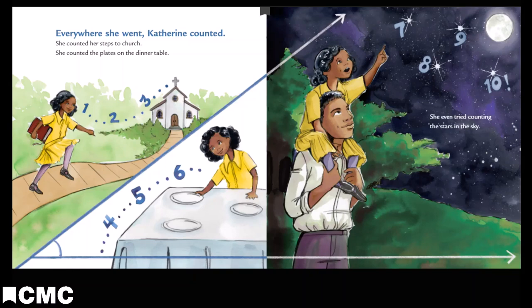Everywhere she went, Catherine counted. She counted her steps to church, the plates on the dinner table, and even tried counting the stars in the sky.